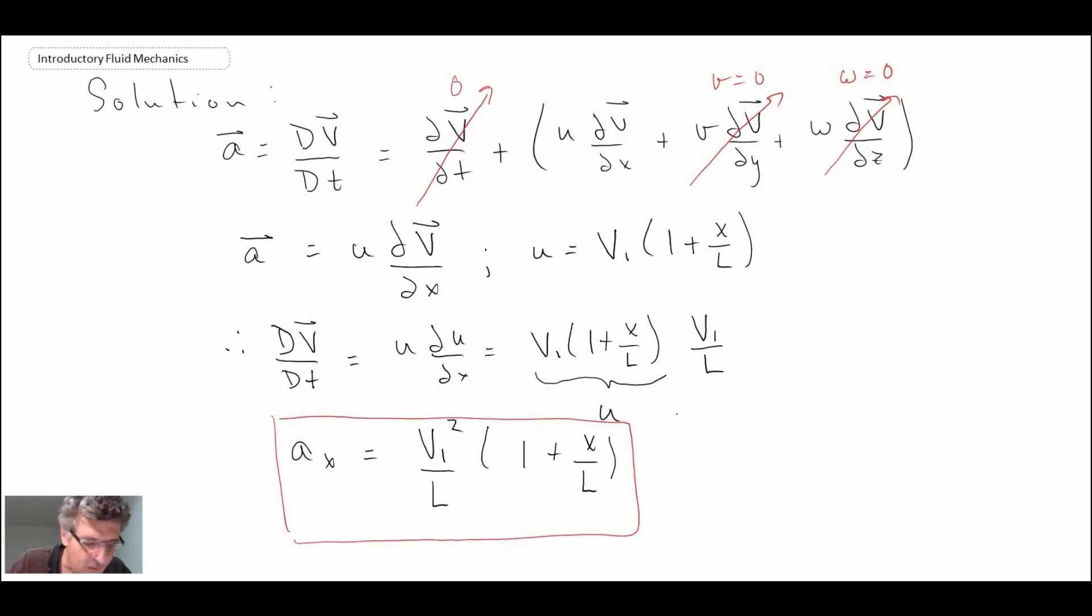There are a couple of things that we can note. We have aₓ even though it's steady flow—the fluid convects to a region of higher velocity. And this is the Eulerian expression.